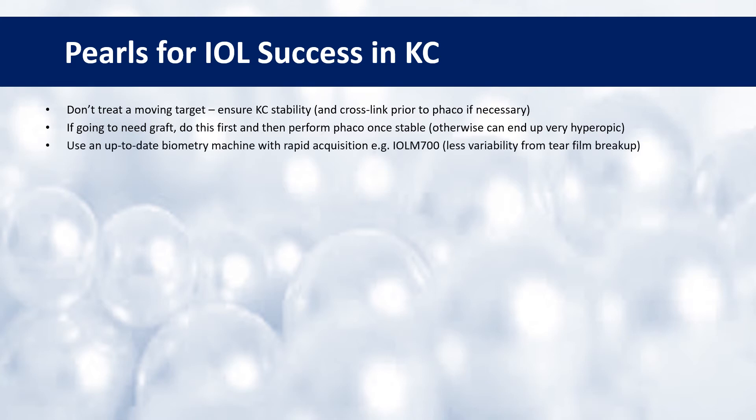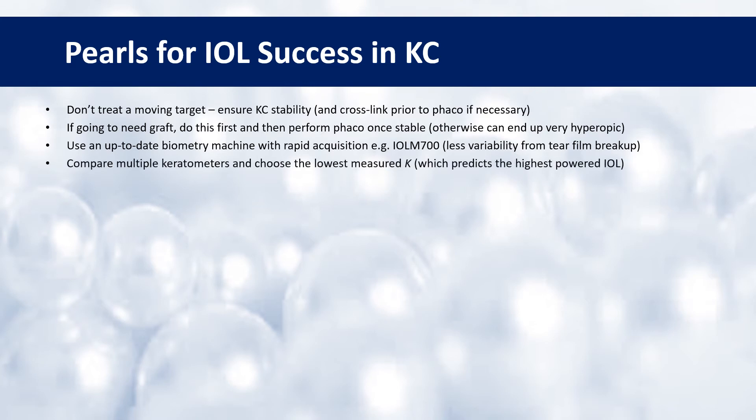Obviously, use an up-to-date biometry machine with rapid acquisition. Something like the IOL Master 700 has a much faster acquisition than the 500, which means there's less variability from tear film breakup, so you're more likely to get accurate Ks. You can compare multiple keratometers and choose the lowest measured K, which then predicts the highest powered IOL — again, just to reduce your risk of having a hyperopic surprise.